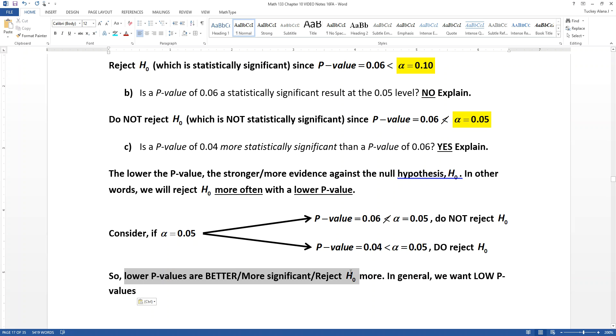Lower p-values make better, more significant, get to reject null hypothesis, more good stuff. So you want low, low p-values. The lower, the better.